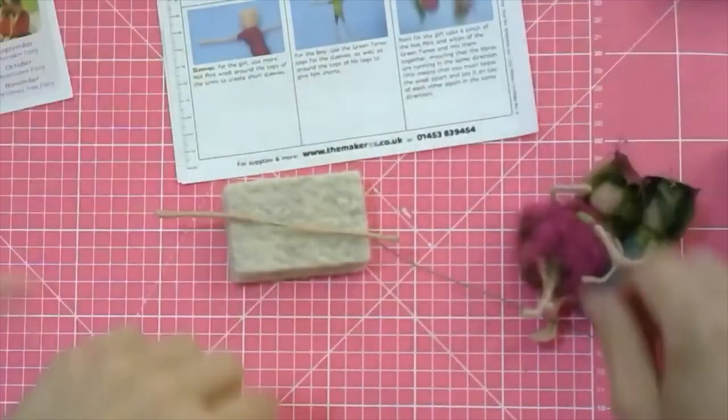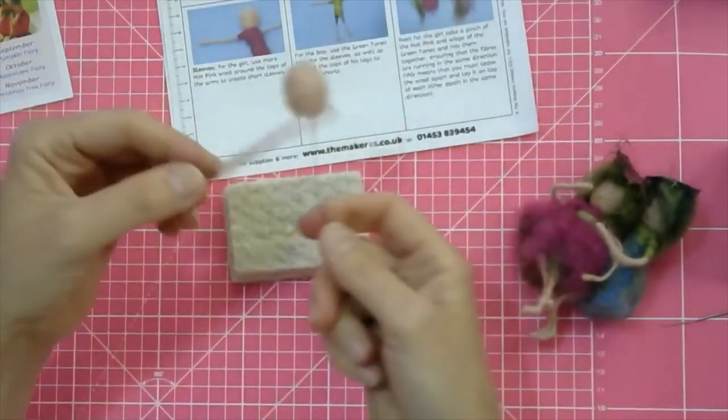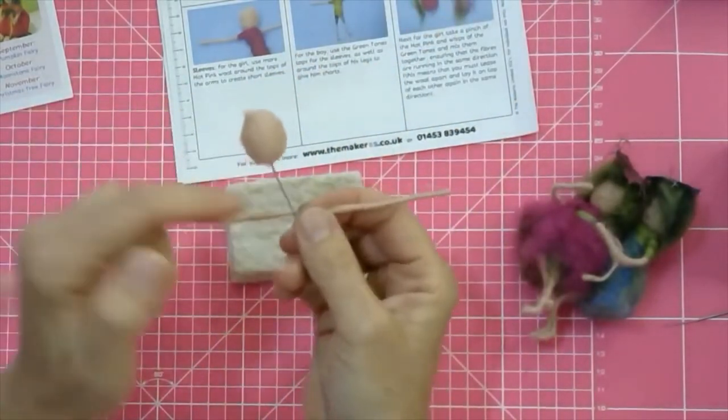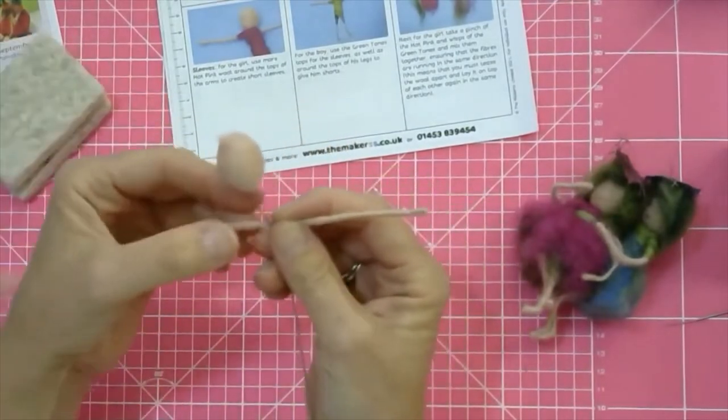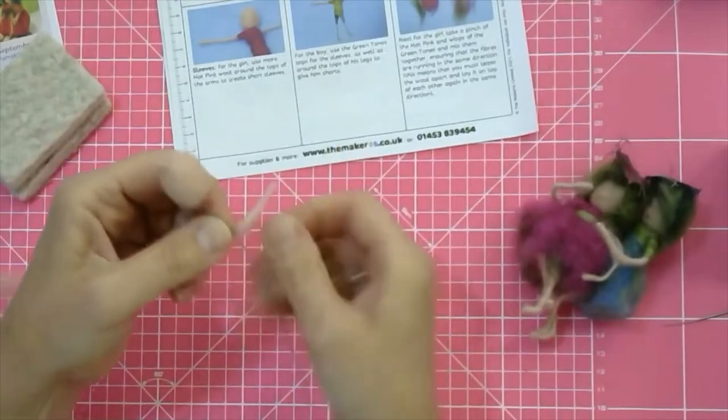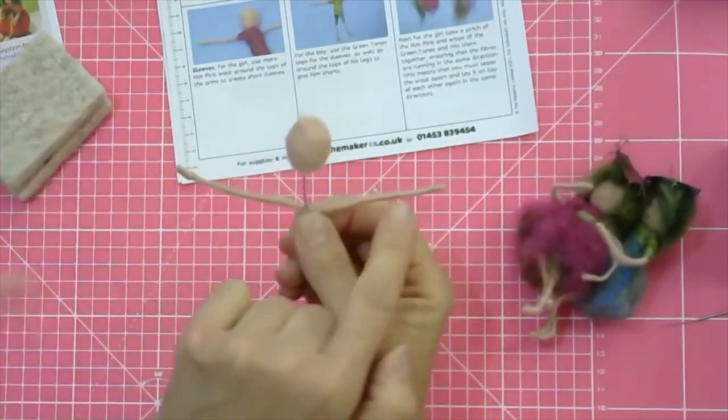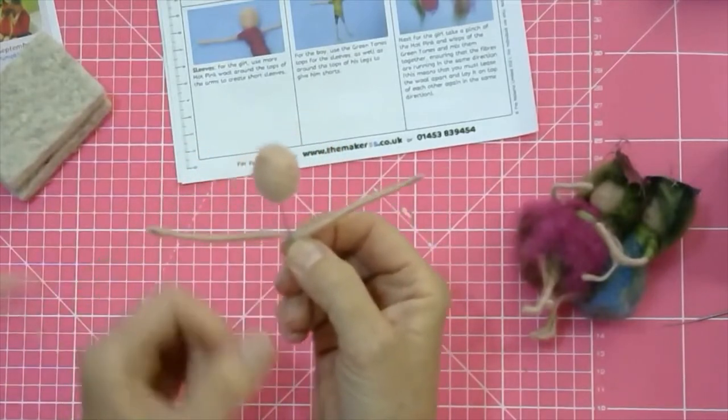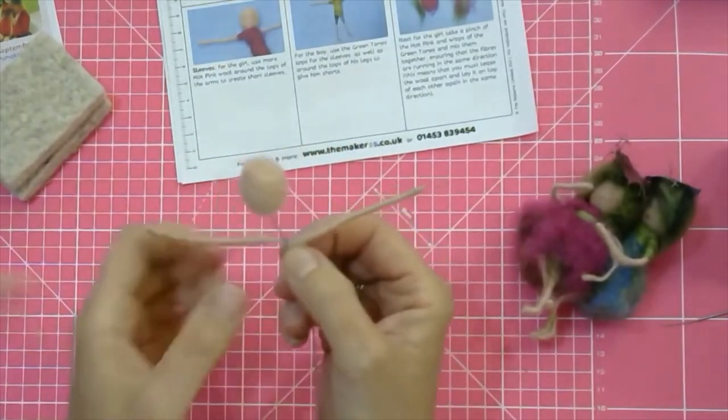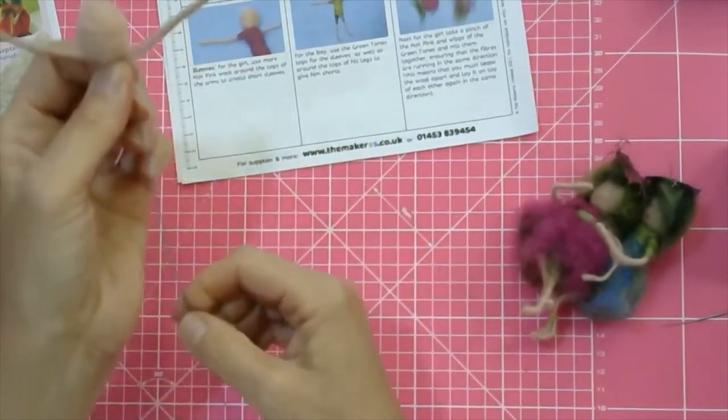I'm going to put these now around the fairy's main wire coming down from the head. And to do this I'm literally twisting the arms around the main wire. And what you've got to do is you've got to make sure that these arms are obviously the same length now. So undo the twist and just adjust it a little bit if need be. And then you can push them up.